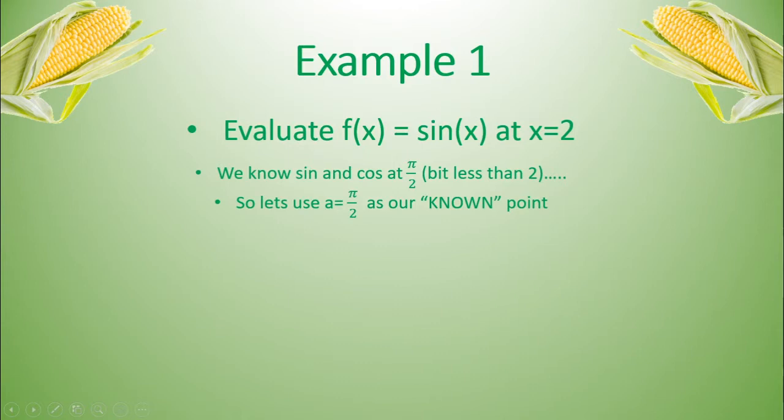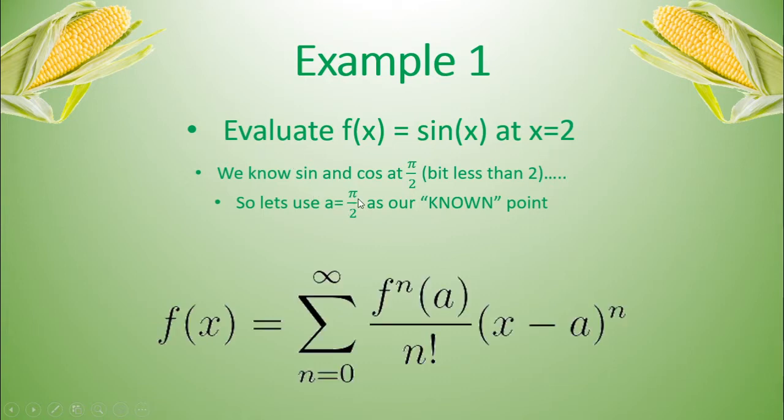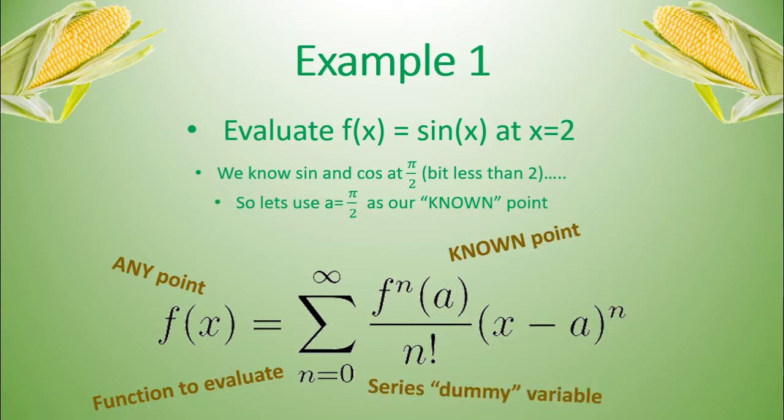Now, let's do an example of how this can actually help us find an unknown value given a value we know. So let's evaluate f(x) equals sine of x at x equals 2. The reason why this is relevant is we know sine and cosine at pi over 2, which is 3.14 divided by 2, which is a bit less than 2, but not the actual value at x equals 2. And so let's use a equals pi over 2 as our known point. So our function to evaluate here is sine of x. The any point, the point that we're looking for, is x. The known point is pi over 2. And our series dummy variable is still n.